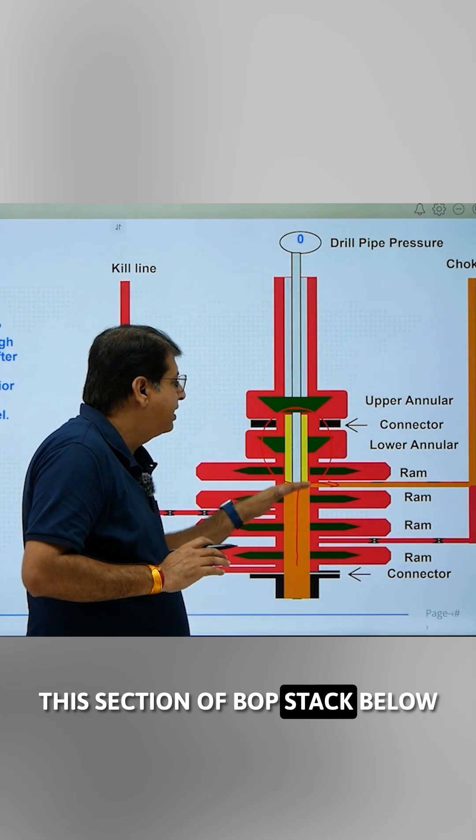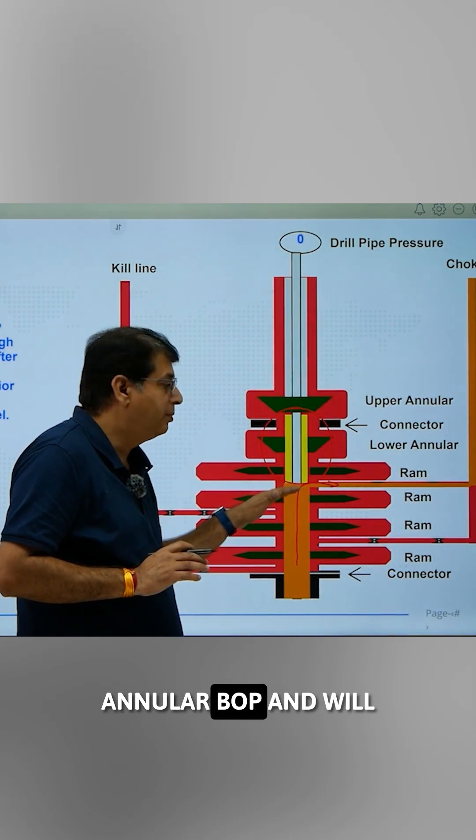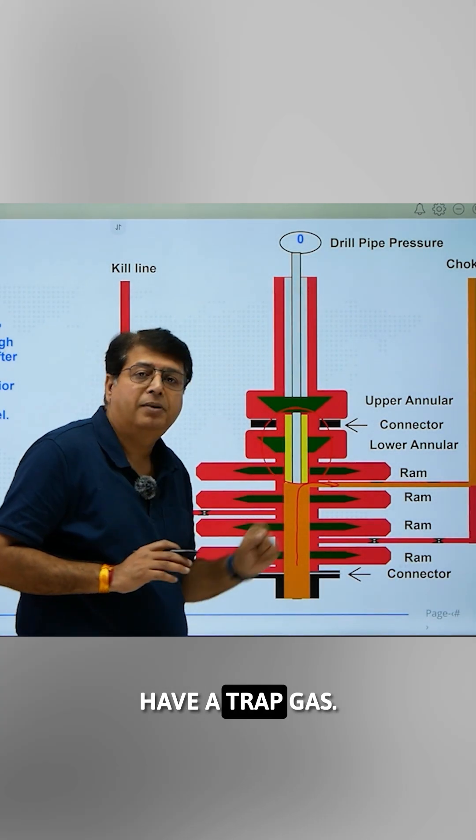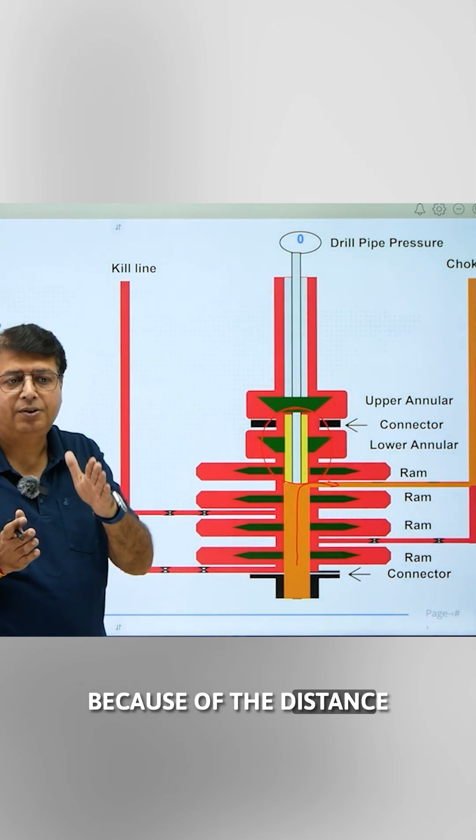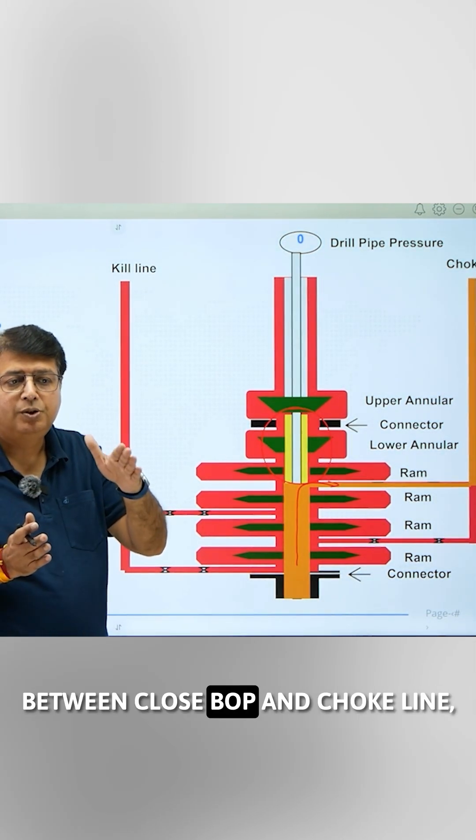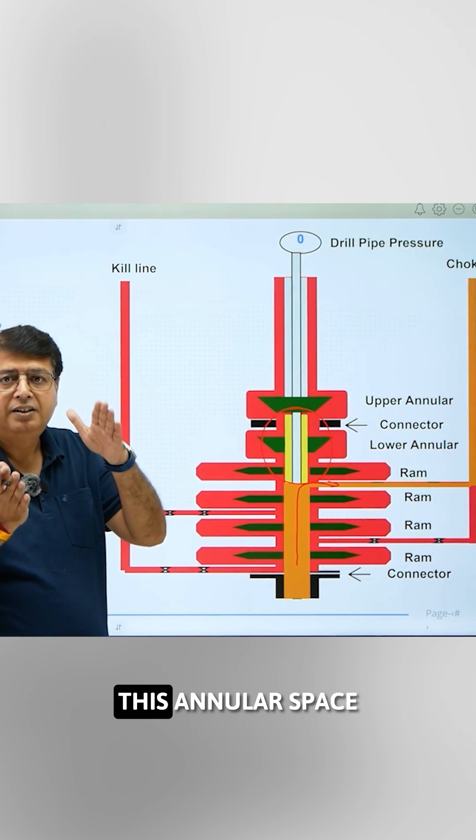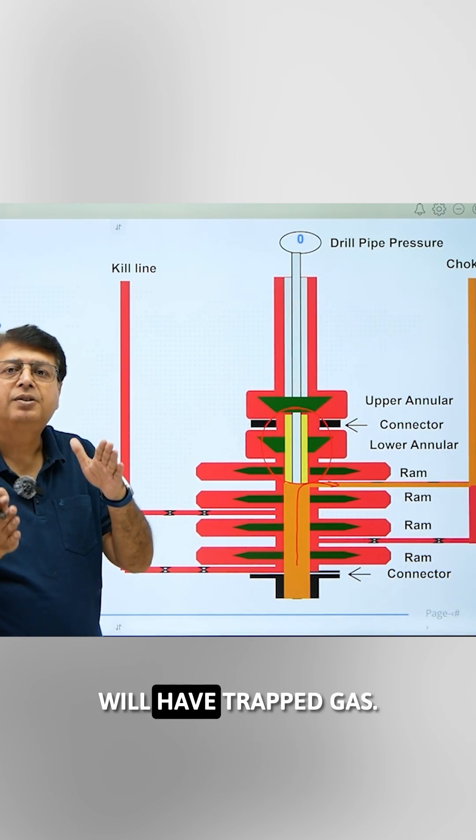This section of BOP stack below annular BOP will have trapped gas. And that's the reason, because of the distance or the space between closed BOP and choke line, this annular space will have trapped gas.